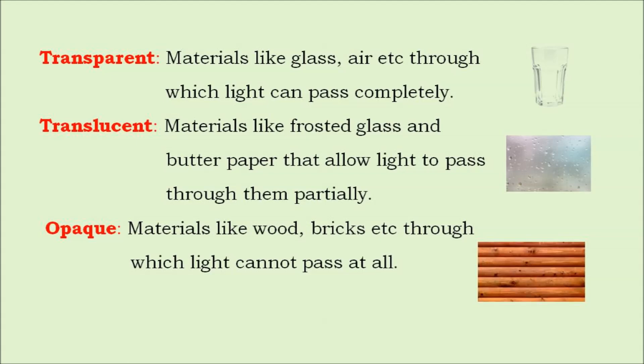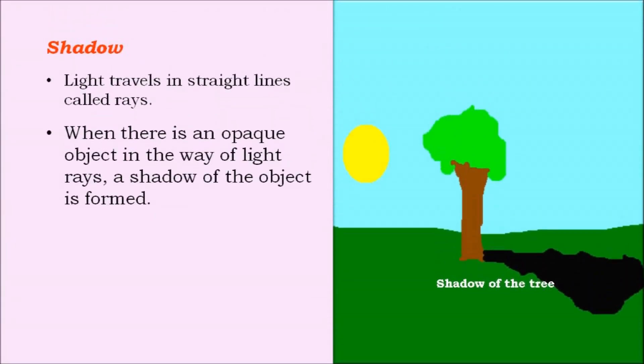Now let us see how a shadow is formed. Light travels in straight lines called rays. When there is an opaque object in the way of light rays, a shadow of the object is formed.